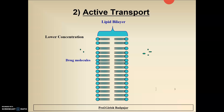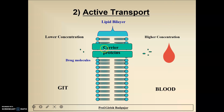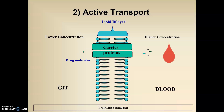The second process is active transport. In active transport, drug molecules are present in lower concentration in the GIT and are transported from lower concentration to higher concentration — with the help of protein molecules called carrier proteins. Such transport of drugs is called active transport, and energy is required for this process. Drugs are transported from lower concentration to higher concentration with the help of carrier molecules and with the expenditure of energy, that is ATP.